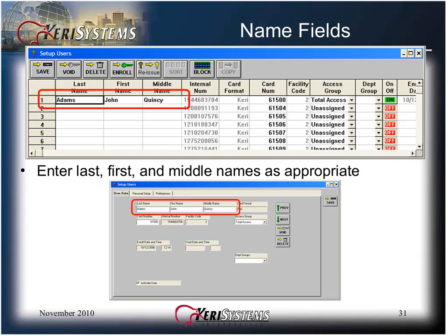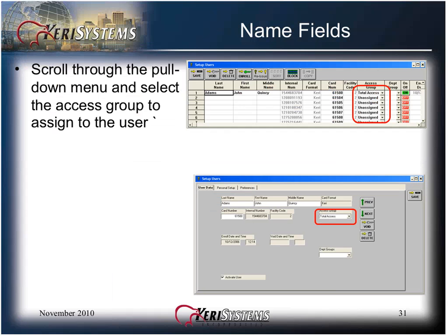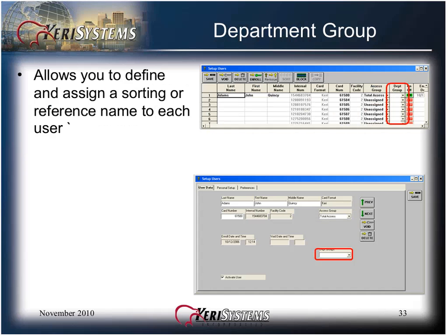In the name fields, you can enter a last name, a first name, and an optional middle name, either in the spreadsheet or in the dialog box. The access groups were previously created. For a card to grant access, it must be assigned a valid access group and be enabled or turned on. Scroll through the pull-down menu and select the access group to assign to the user. The department group allows you to define and assign a sorting or reference name to each user. Either click in the field and type in the department group name, or scroll through the pull-down menu and select an existing department group to assign to the user.